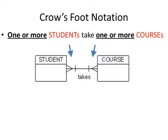The third Crow's Foot Notation is the one-or-more to one-or-more representation. In this example, we have the Student table and the Course table, where one or more students can take one or more courses. This is represented using a vertical line for 'one' and a triangle for 'more' on both sides of the relationship.